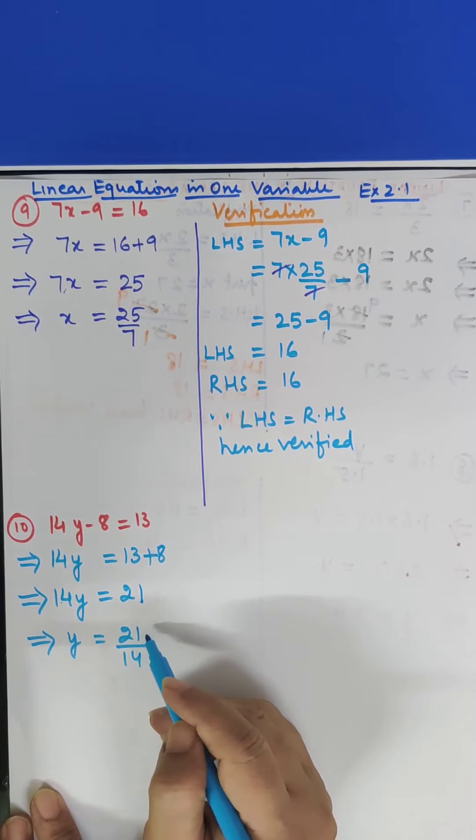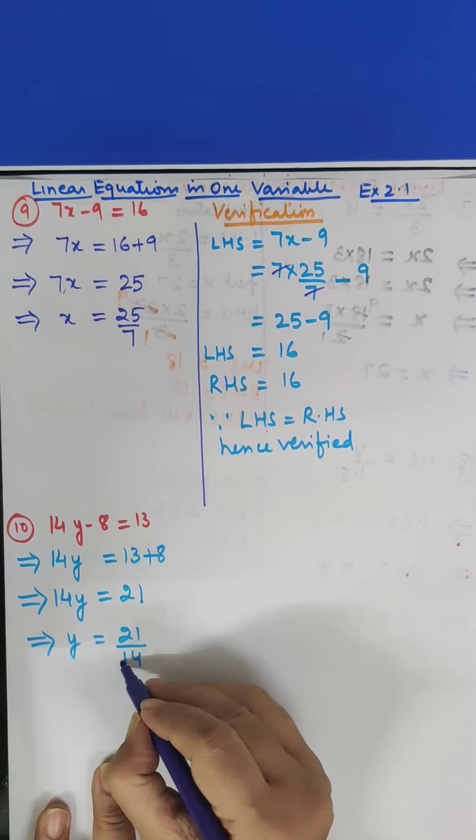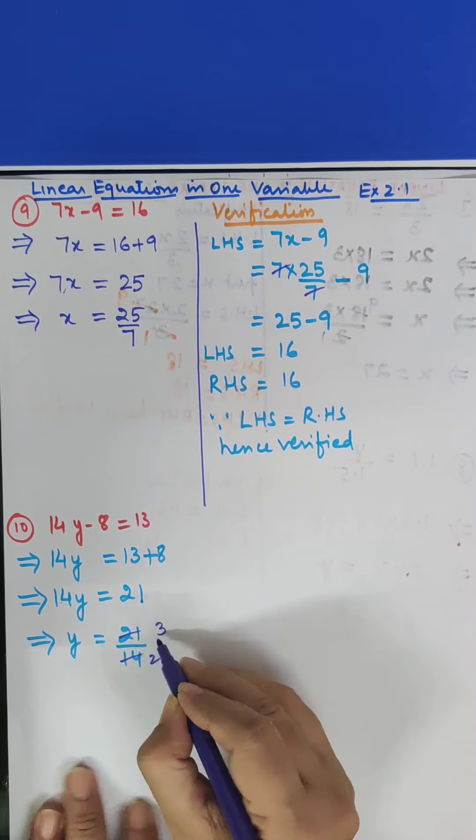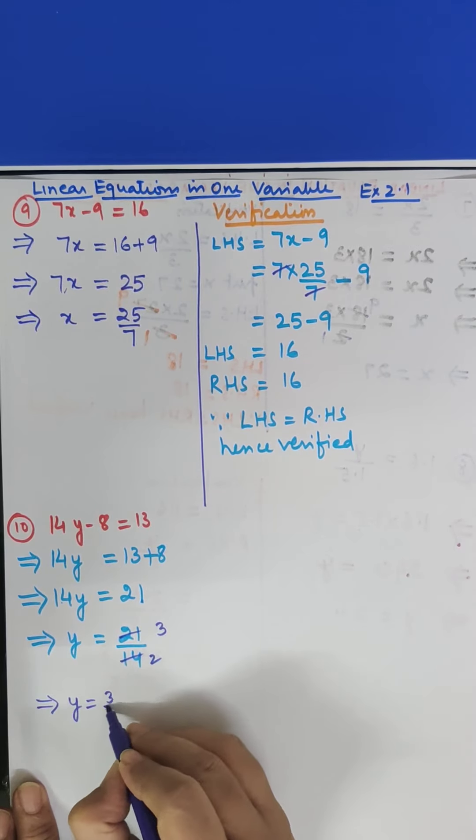Now cancel this. 7, 2s are 14. 7, 3s are 21. So this implies that Y is equal to 3 upon 2.